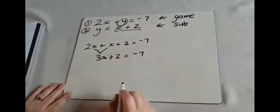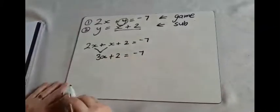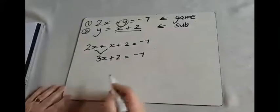You've now got a standard two-step linear equation. And the idea of that is to get x on its own so that we can work out its value.